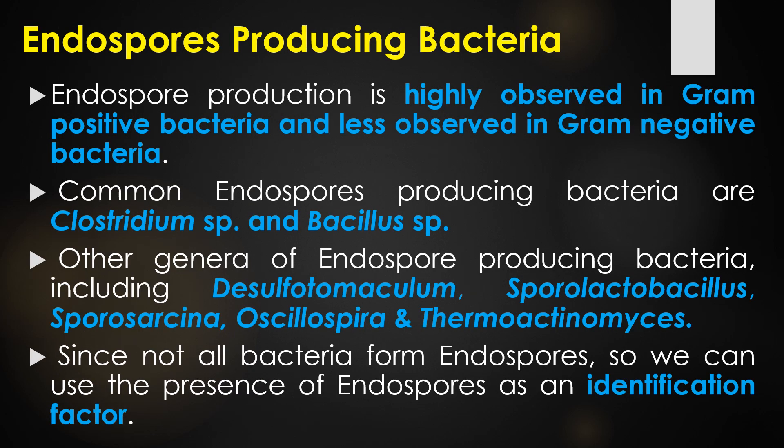Endospore production is highly observed in gram-positive bacteria and less observed in gram-negative bacteria. Some common endospore-producing bacteria are Clostridium species and Bacillus species, which are familiarly known as gram-positive bacilli. Other genera of endospore-producing bacteria include Desulfotomaculum, Sporolactobacillus, Sporosarcina, Oscillospira, and Thermoactinomyces. Since not all bacteria form endospores, we can use the presence of endospores as an identification factor through endospore staining methods.